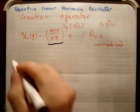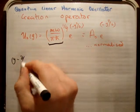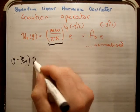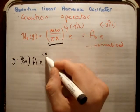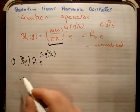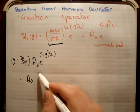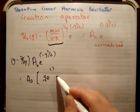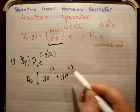So what I'm going to do is apply Y minus DDY, the raising operator or the creation operator, on U0, which is going to be A0 times e to the minus Y squared over 2. Alright? So that's going to be equal to A0 outside of Y times e to the minus Y squared over 2, plus Y times e to the minus Y squared over 2.